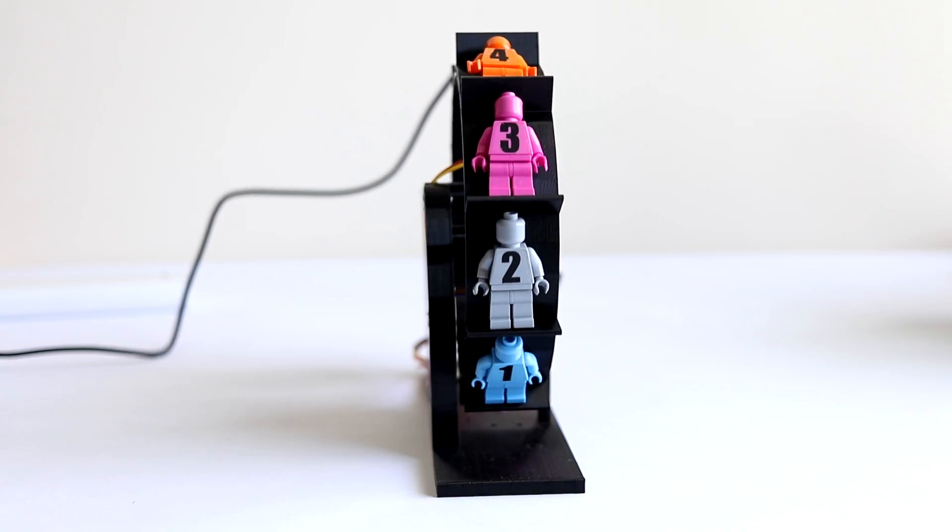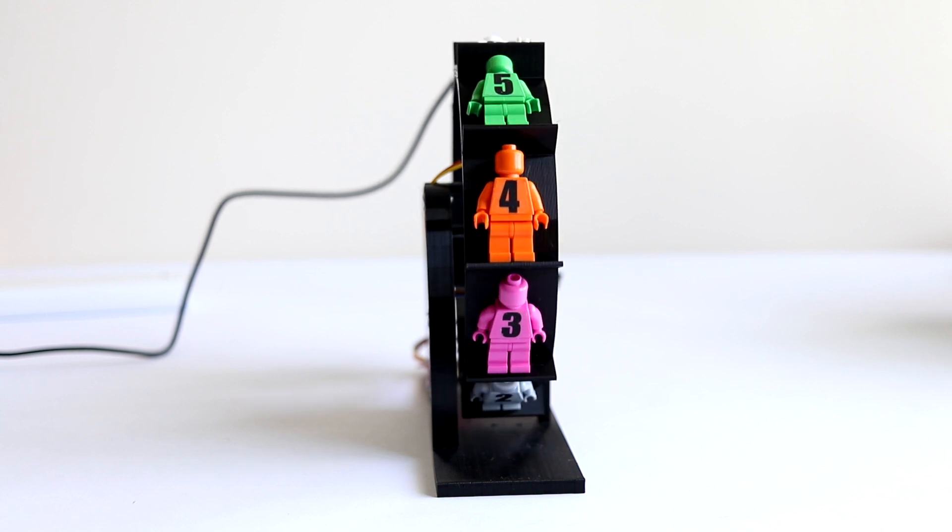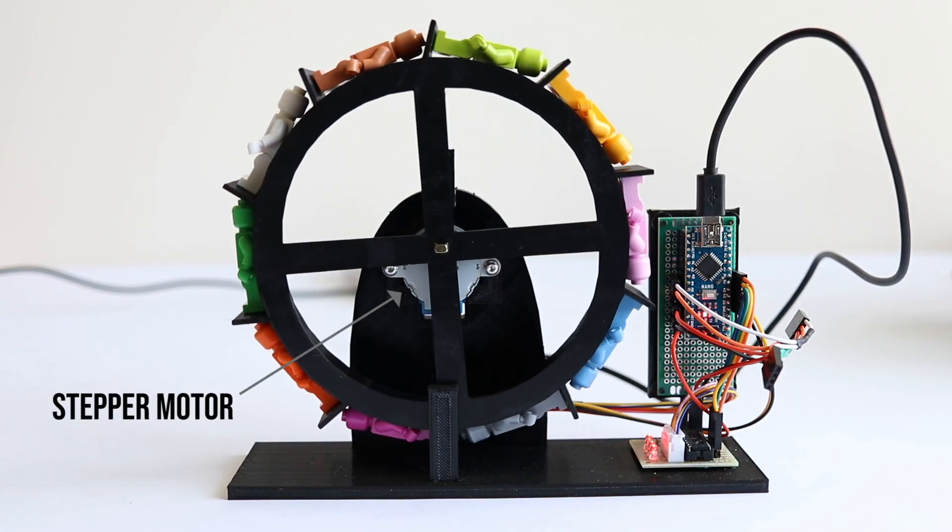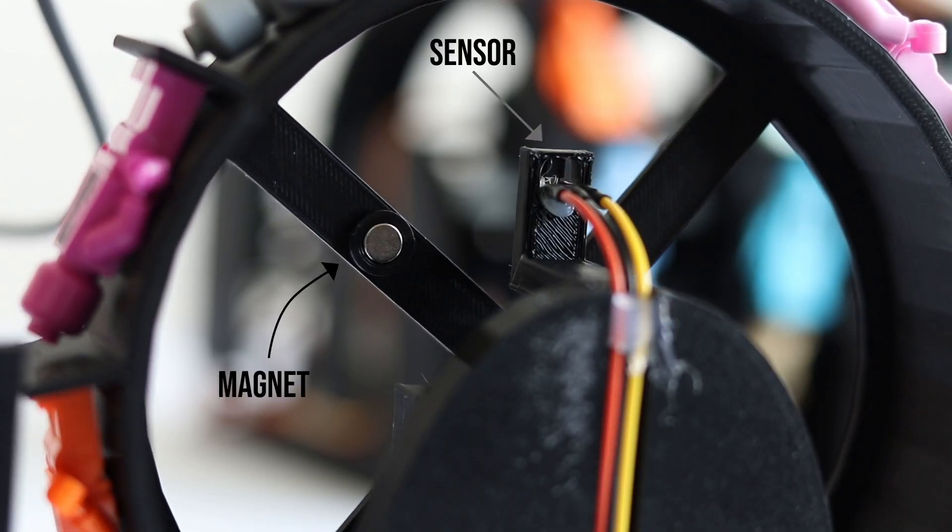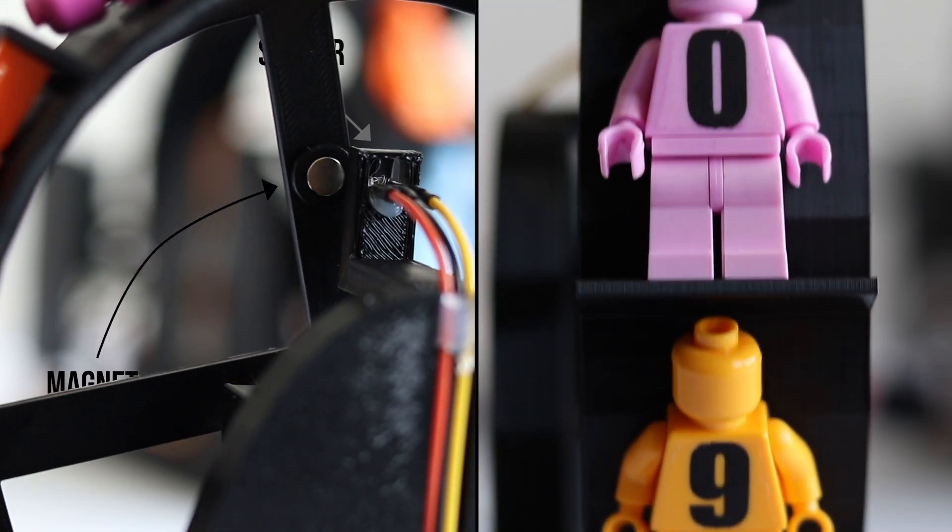Each wheel has 10 minifigures, so can display 0 to 9. The wheel is turned by a stepper motor, which is controlled by a cheap microcontroller. This little sensor here senses this magnet, so that it can be set to the first position when it's turned on.